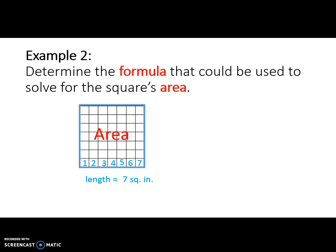Now let's find the square's width by counting the square inches along its width. One, two, three, four, five, six, seven. The width of this square is seven square inches.